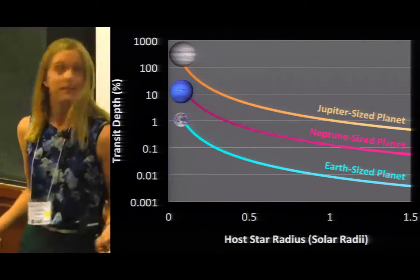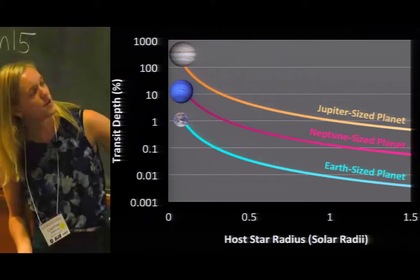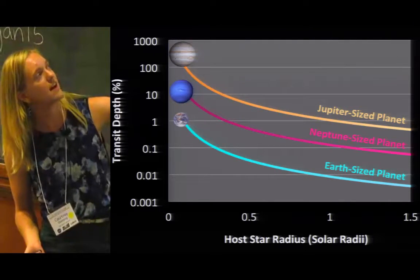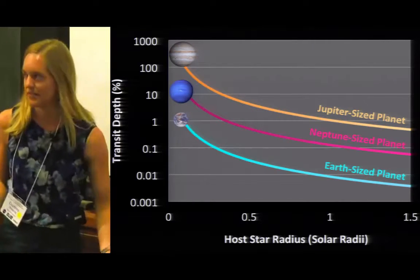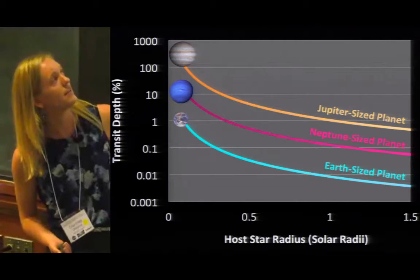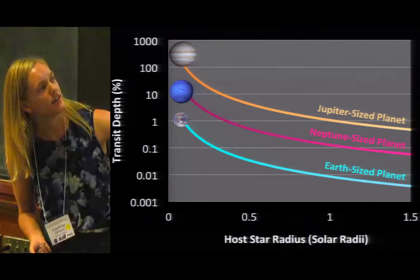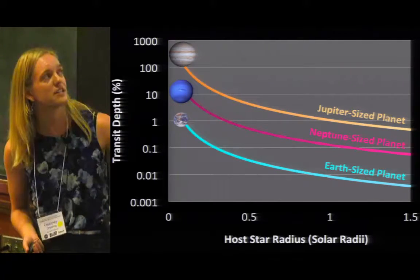So putting this in perspective once more, here we have transit depth versus host star radius, and each of these lines is a different size planet. And what you see is what you probably know intuitively, that to find a very small planet, like this Earth-sized planet here, it really benefits you to look at smaller stars.